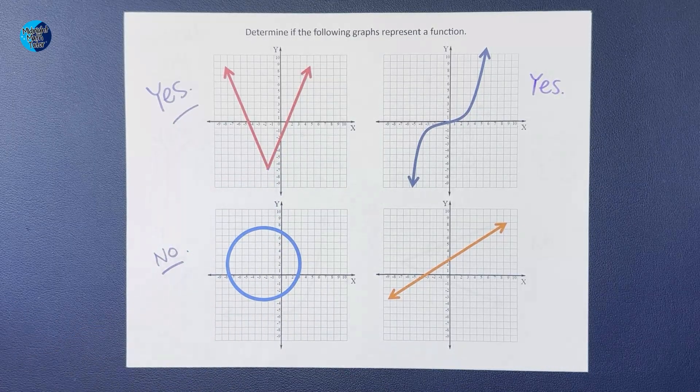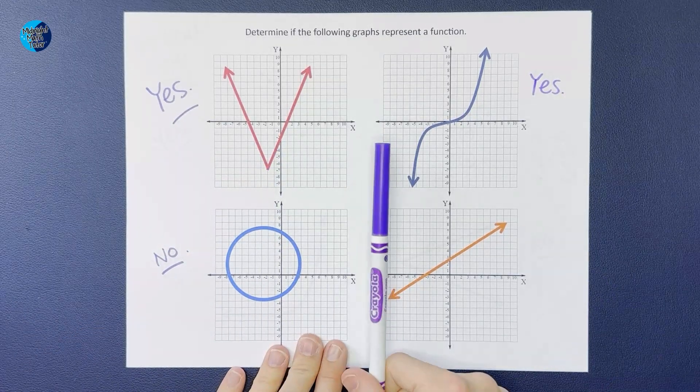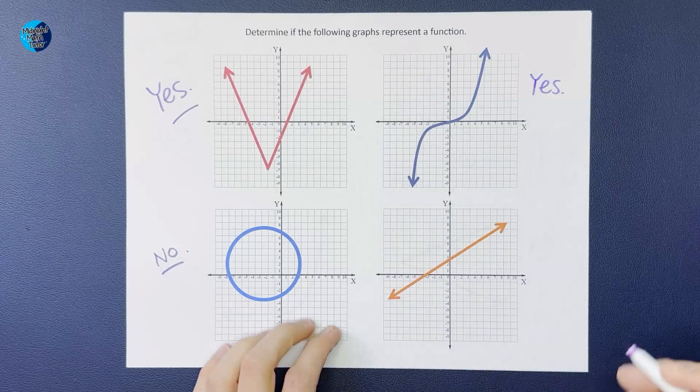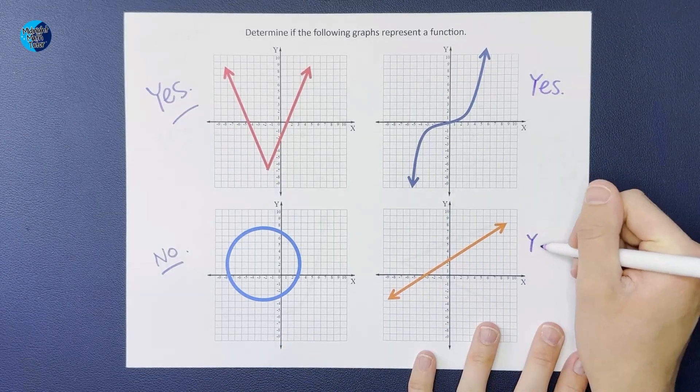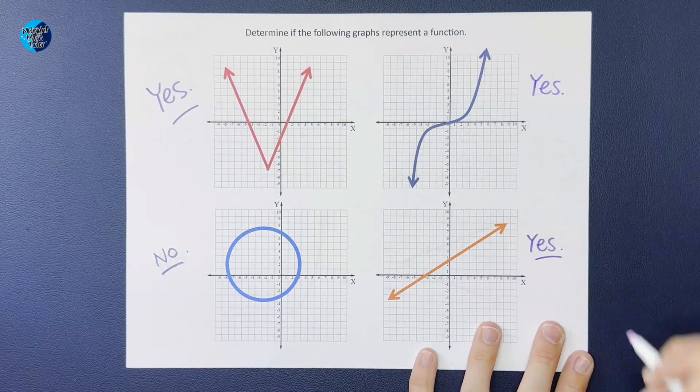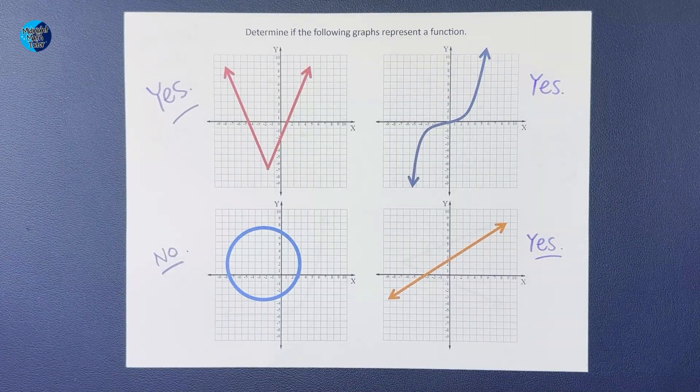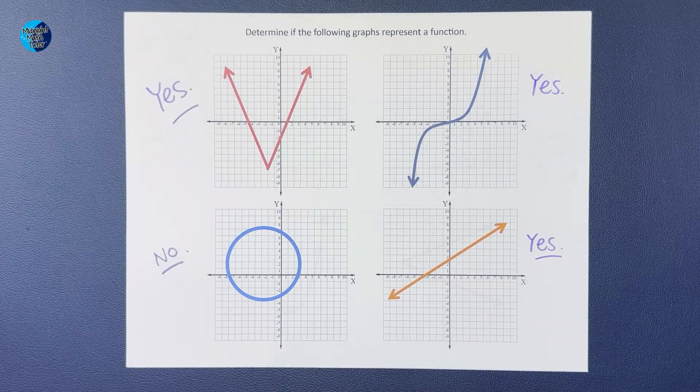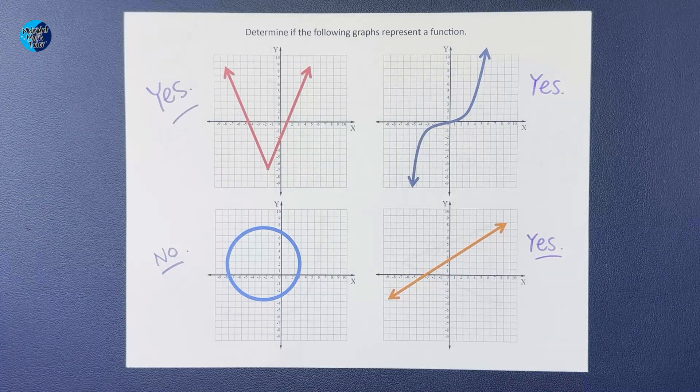Then right here we've got a line. There we go - yep, that one is a function. All right, like I said before, if you need some more examples or you need to see with ordered pairs or tables, I'll link a playlist for you in the corner. Thanks!